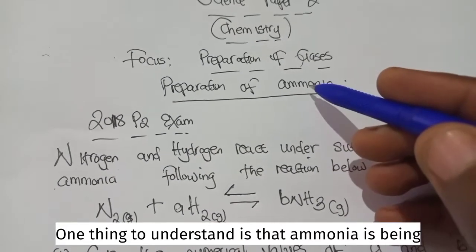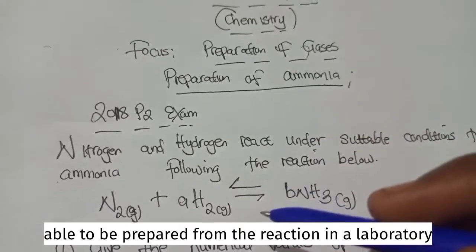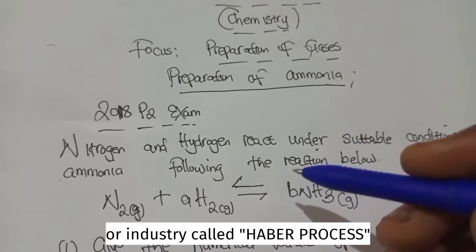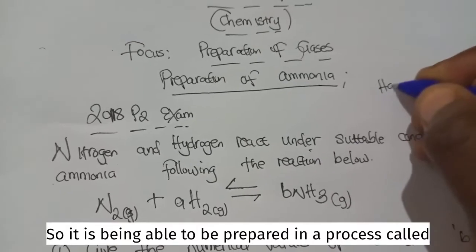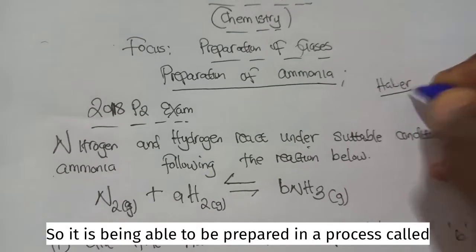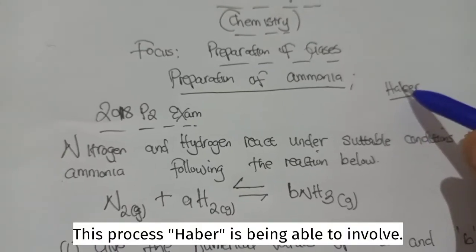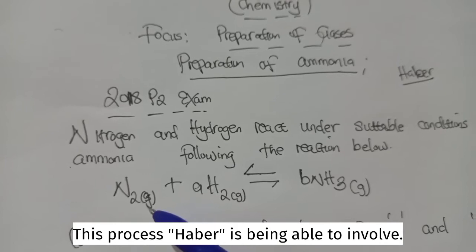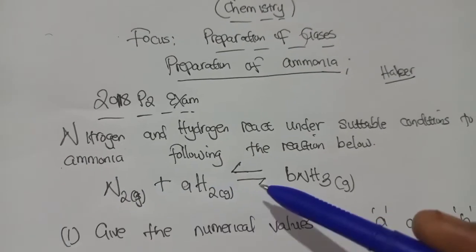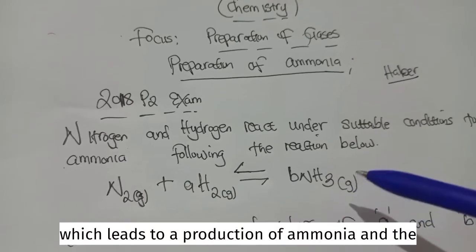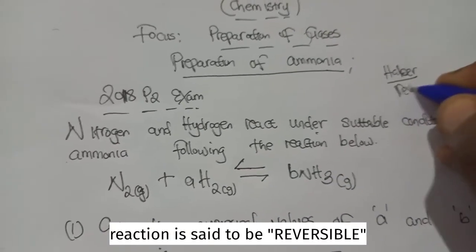One thing to understand is that ammonia is being able to be prepared from a reaction in a laboratory or industry called Haber process. This process involves a reaction between nitrogen gas and hydrogen gas, which leads to production of ammonia. And the reaction is said to be reversible.